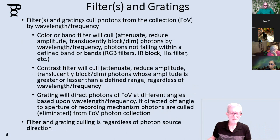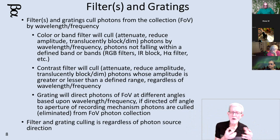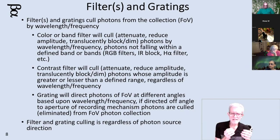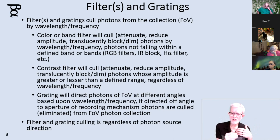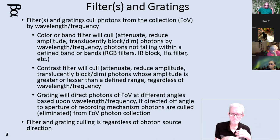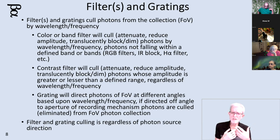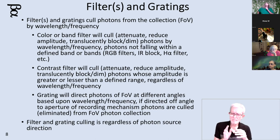And then filters and gratings. Once you've taken the light that you wanted, got rid of the light you didn't want, and focused to get the particular age of photons you want — now you've got your target. How do you want to look at it? Do you want to look at it full spectrum? Do you want to look at it in a particular color band? Do you want to do this spectroscopically — split the light into a rainbow and record the rainbow? These are filters and gratings — wavelength splitting.